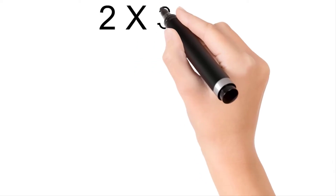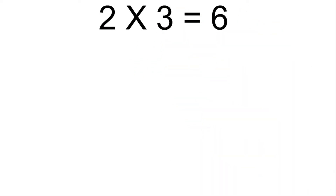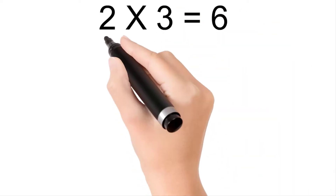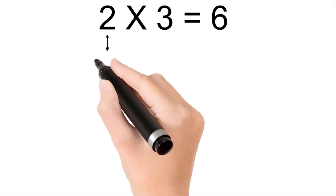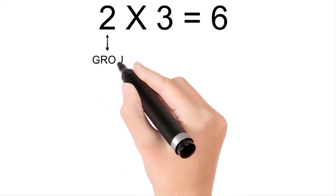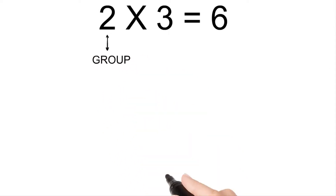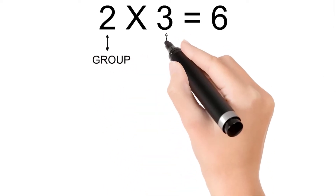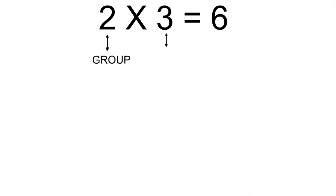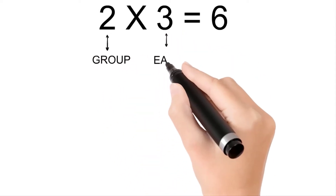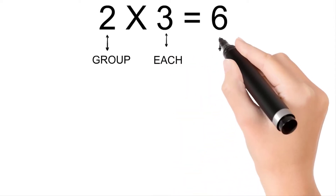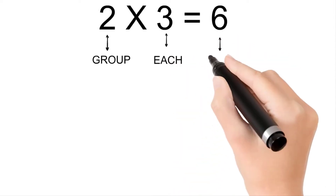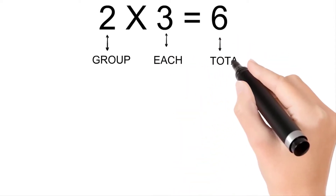Two times three is six. Two is group, three is each, and six is total.